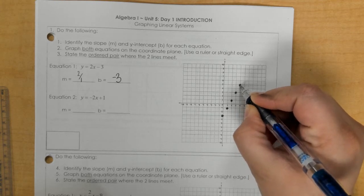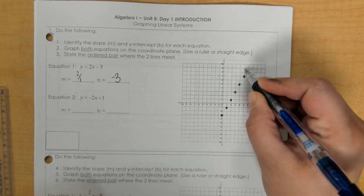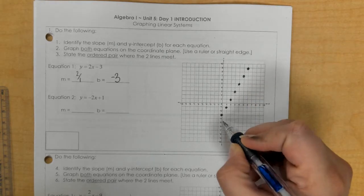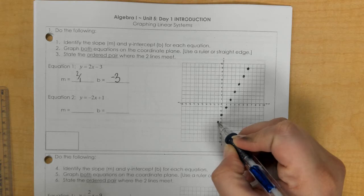So again, up 2, right 1. And then we could go down 2, left 1.